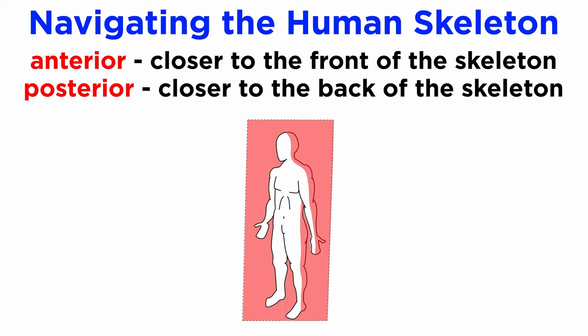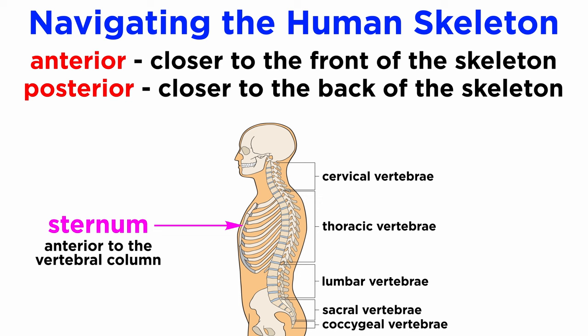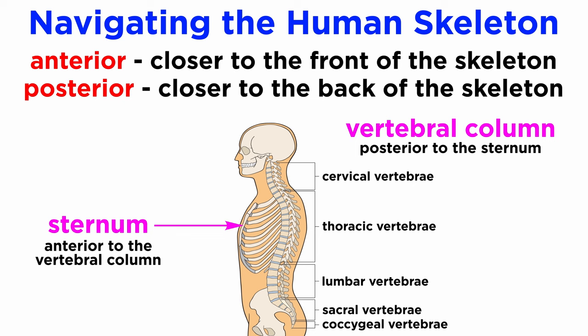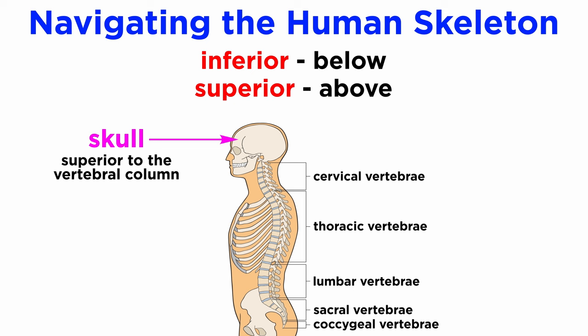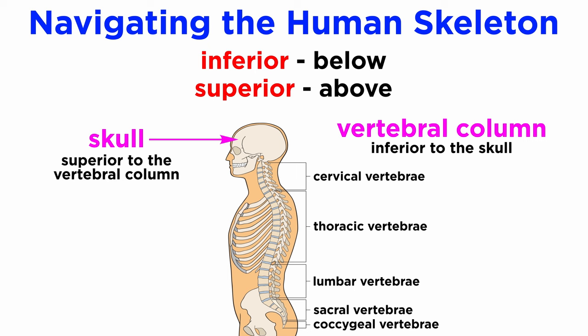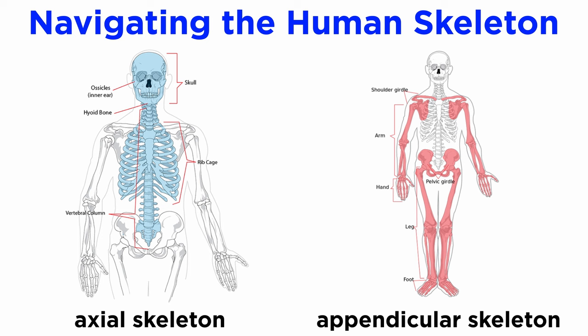Anterior and posterior refer to a bone's position or surface in relation to the coronal plane. The sternum, or breastbone, is anterior to the vertebral column, while the vertebral column is posterior to the sternum. Inferior and superior refer to a bone's position or surface as above and below. The skull is superior to the vertebral column, while the vertebral column is inferior to the skull.